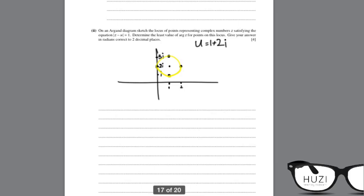Determine the least value of argument z for points on this locus. Argument z means from the origin. To find the least value, we need to draw a tangent to the circle. This is the angle we are looking for. We draw this triangle. This is 90 degrees. This side is 1, the radius. This is the modulus of u. Modulus of u is |1 plus 2i|, which is square root of (1 squared plus 2 squared), equals square root of 5.